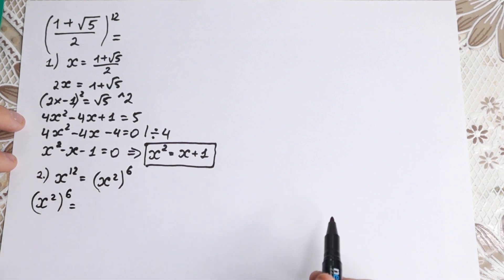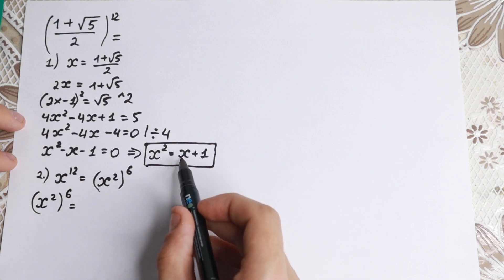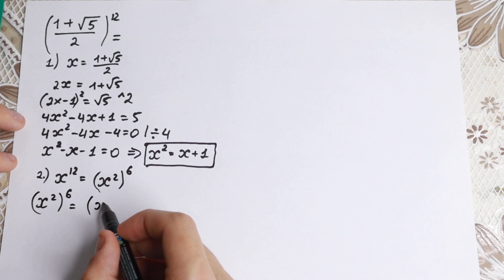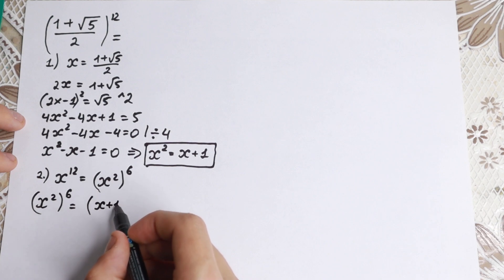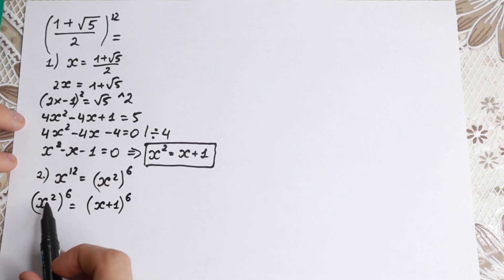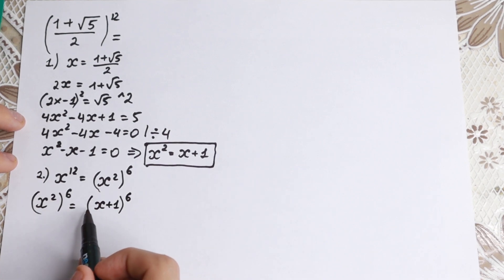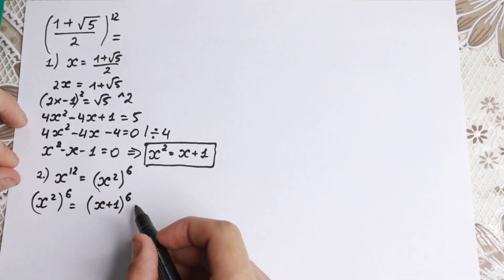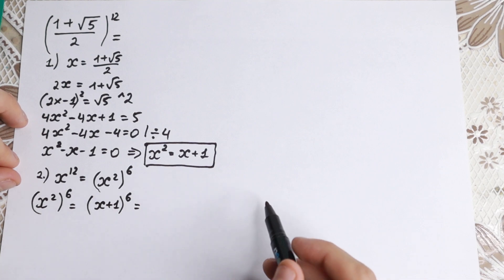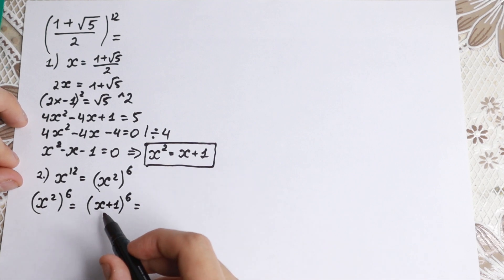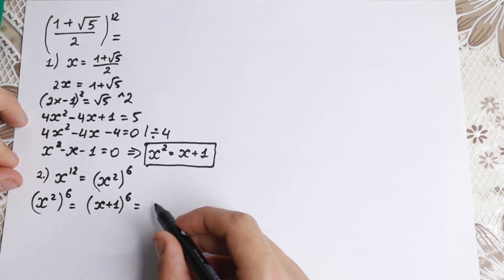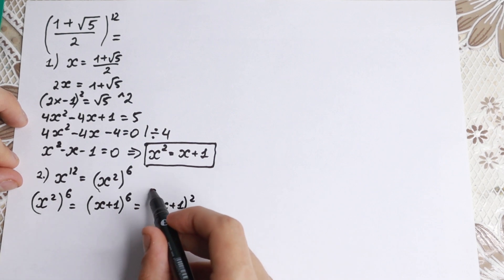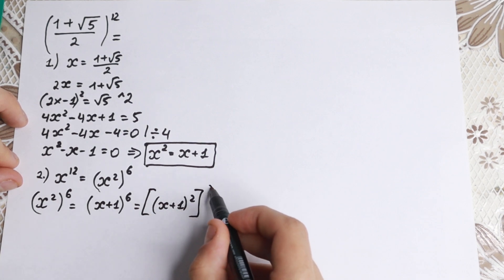We know x² equals x plus 1, so (x²)⁶ becomes (x plus 1)⁶. We no longer have a square root — just this expression equal to x to the 12th power. But we don't need to expand the sixth power directly. Let's write (x plus 1)⁶ as ((x plus 1)²)³.